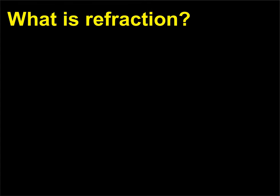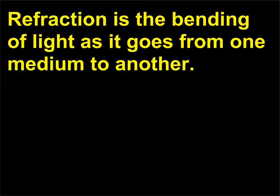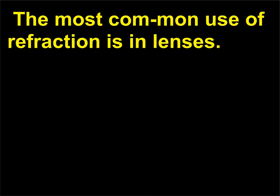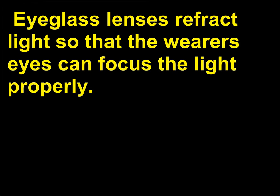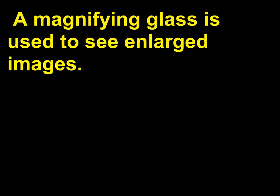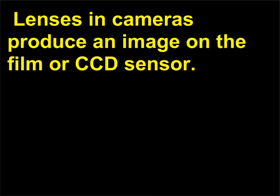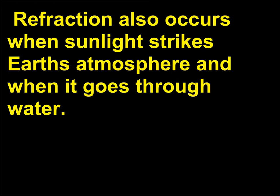Refraction is the bending of light as it goes from one medium to another. The most common use of refraction is in lenses. Eyeglass lenses refract light so that the wearer's eyes can focus the light properly. A magnifying glass is used to see enlarged images. Lenses in cameras produce an image on the film or CCD sensor. Refraction also occurs when sunlight strikes Earth's atmosphere and when it goes through water.